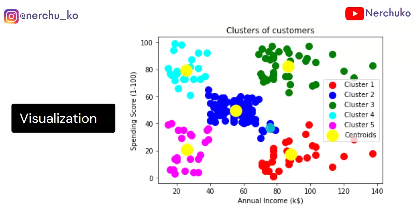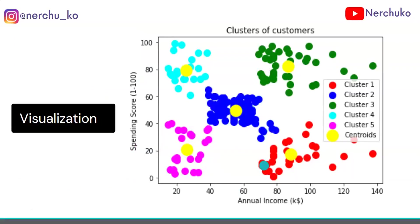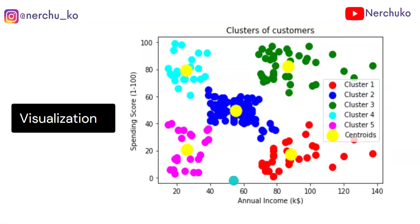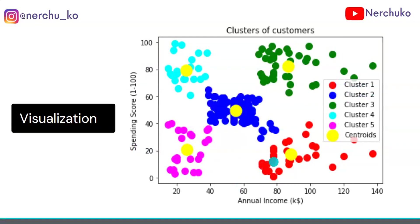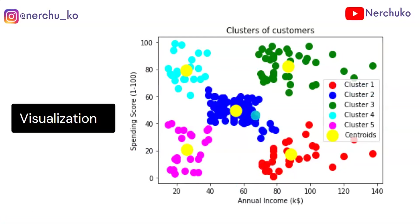We fit and predict using: y_hc = hc.fit_predict(X). Visualizing the results, we have 5 clusters: Cluster 1 is red, Cluster 2 is blue, Cluster 3 is green, Cluster 4 is sky blue, and Cluster 5 is pink/yellow. Each cluster's centroid is marked respectively.